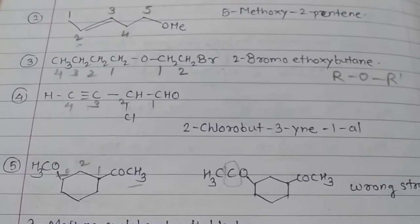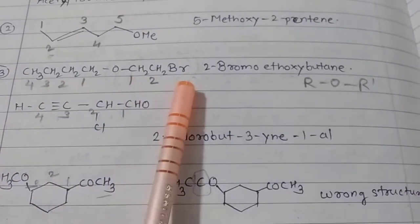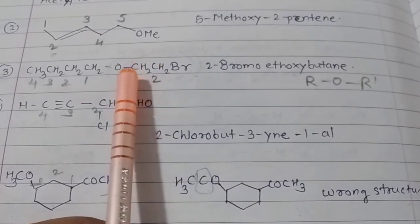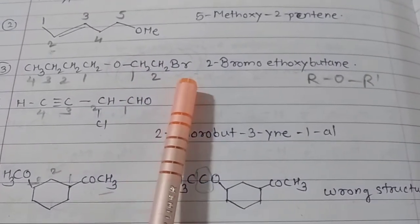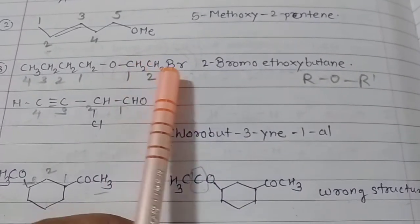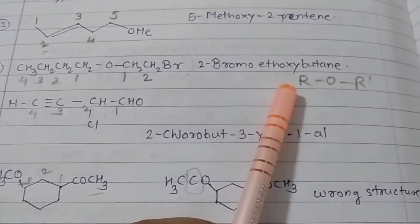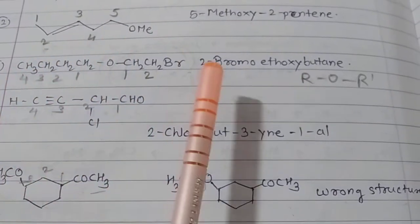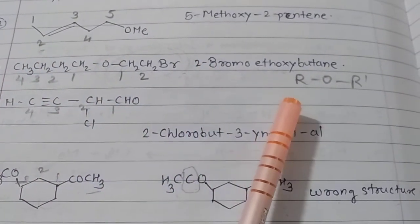The next example is an ether and alkyl halide. The alkyl halide is a substituent. Bromine is on the second carbon, so two-bromo. Then there are two carbons, therefore ethoxy — so two-bromo-ethoxy. And there are four carbons here, therefore the name is two-bromo-ethoxy-butane.